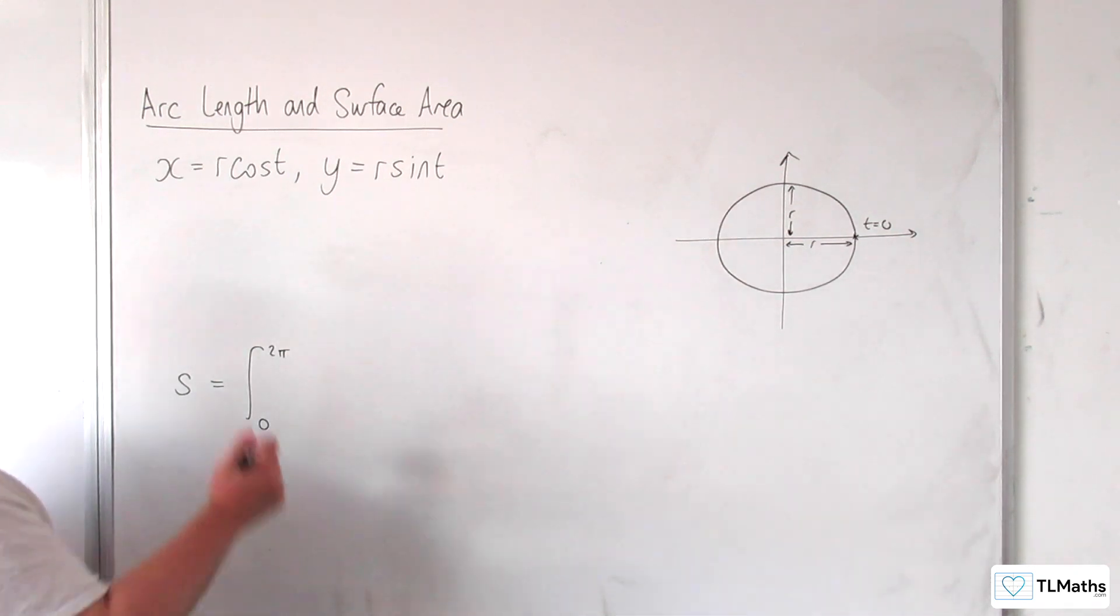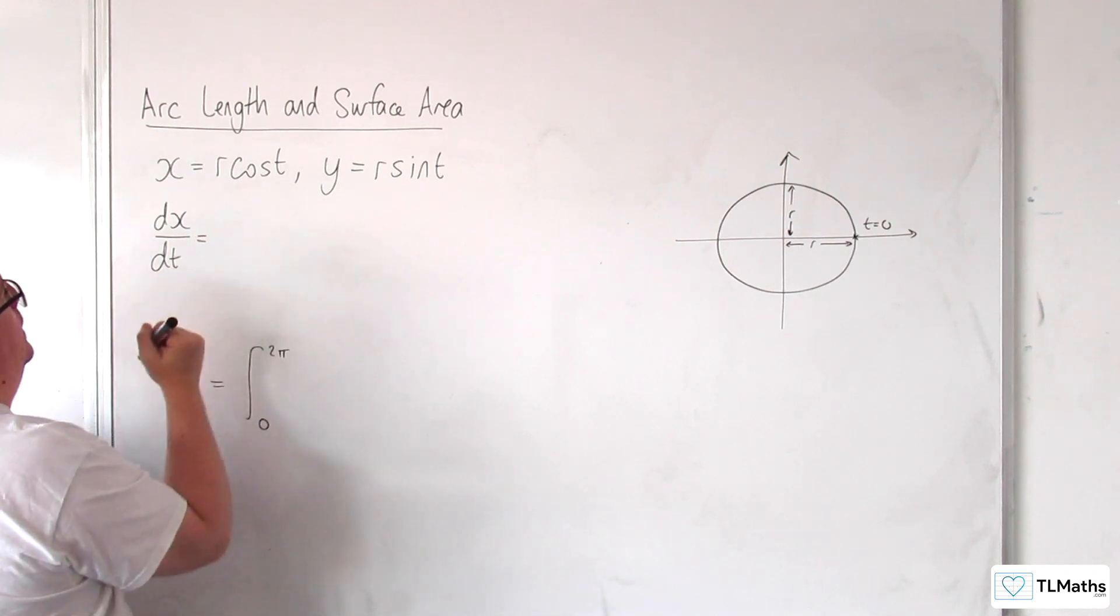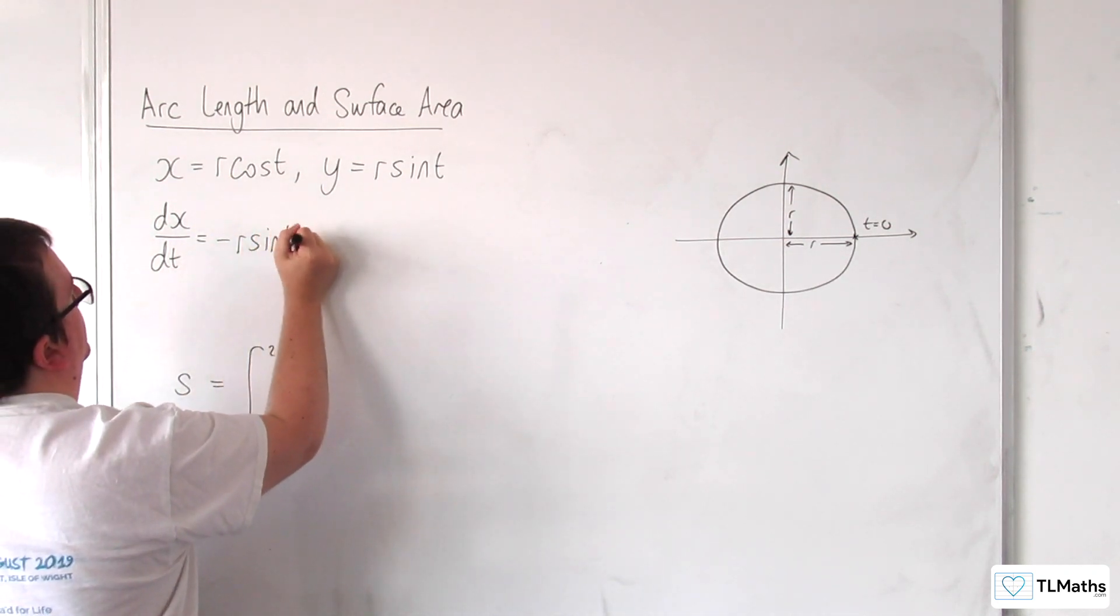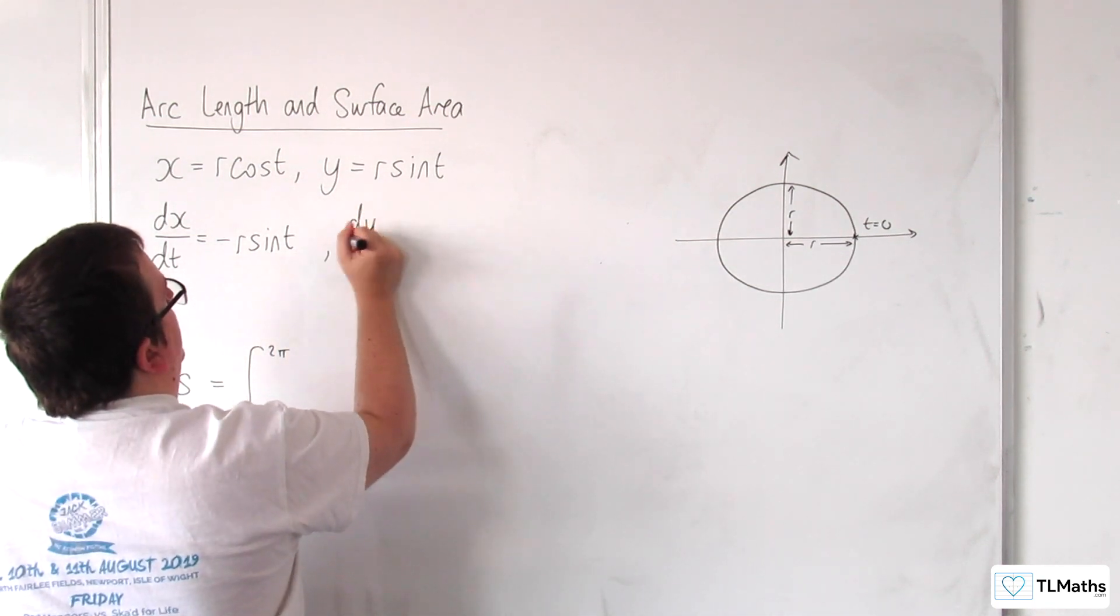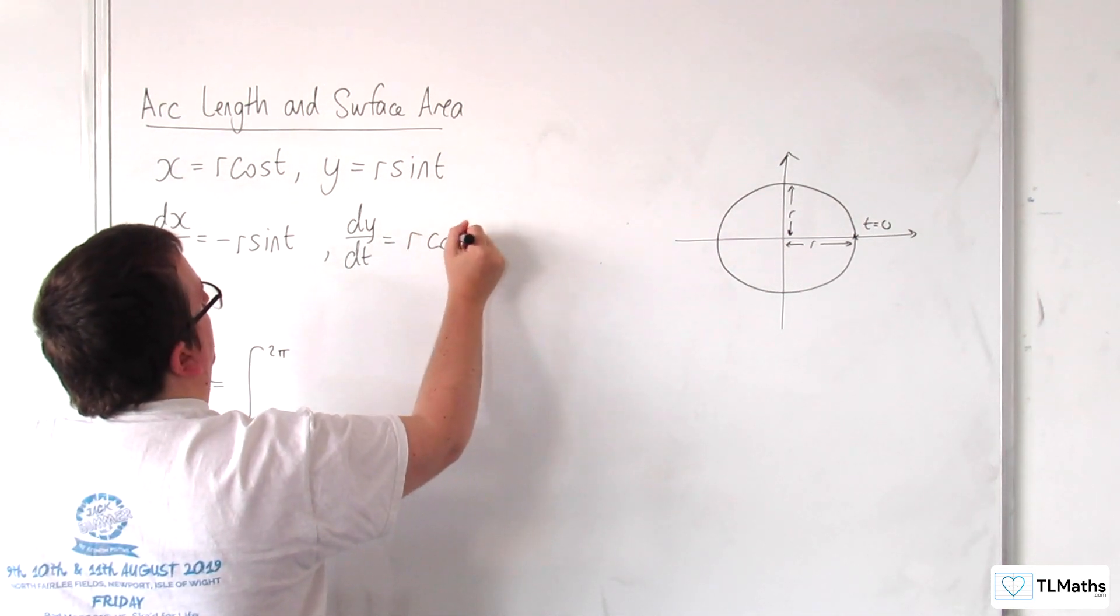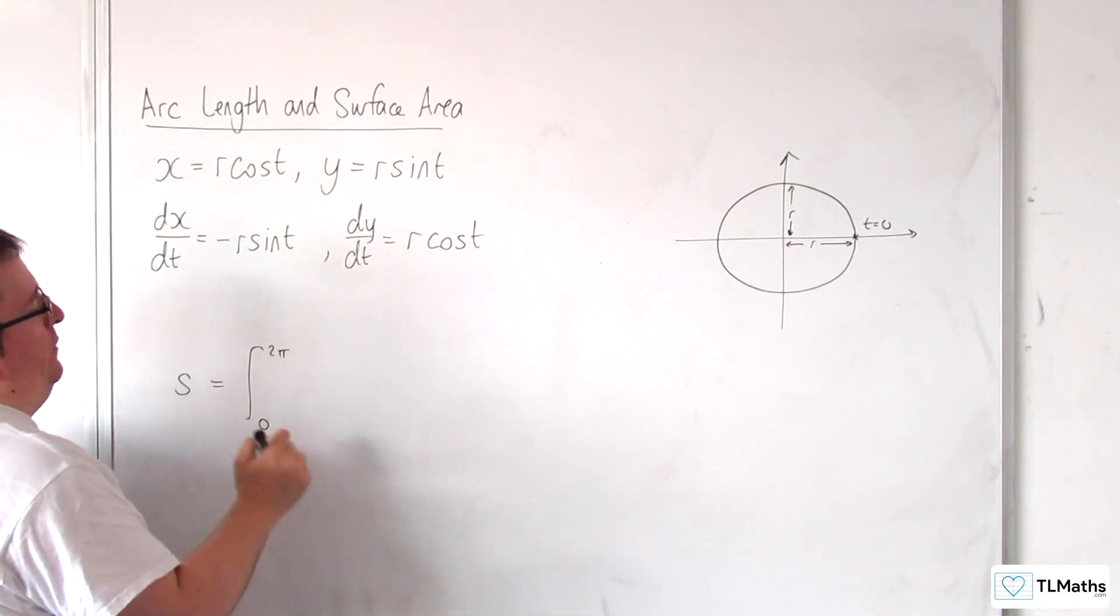Okay, so what we need is dx by dt. So differentiating this, we're going to get minus r sine t.